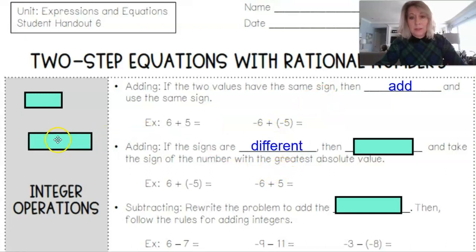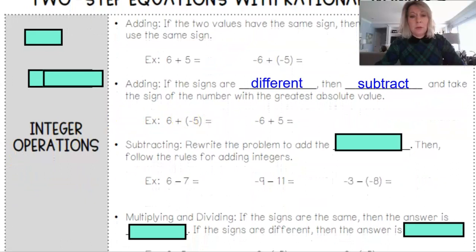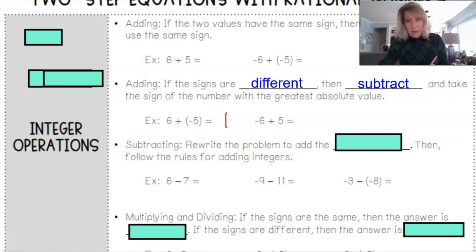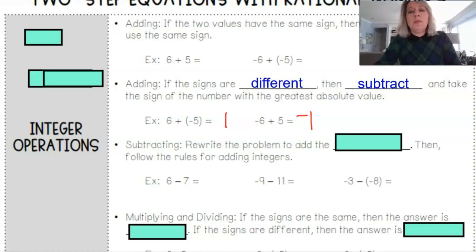If you're adding and the signs are different, it's like a subtraction problem, and you just take the sign of the number with the greatest absolute value. For instance, 6 plus negative 5 is like 6 minus 5, which is 1, and since the 6 is positive with the greatest absolute value, the answer is positive 1. If it were negative 6 plus positive 5, you'd subtract to get 1, but the answer is negative 1 because the negative number has the greatest absolute value.